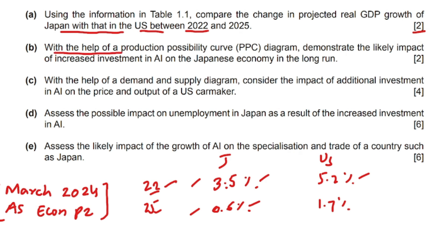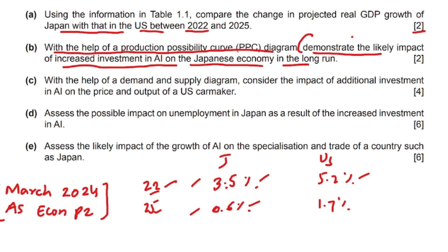The second question asks: with the help of a production possibility diagram, demonstrate the likely impact of an increase in investment in AI on the Japanese economy in the long run. Keep in mind — when the examiner says 'demonstrate,' you only need to show the graph, you need not explain it. An increase in investment in AI will increase the productive potential of Japan's economy, so the PPC will shift to the right.